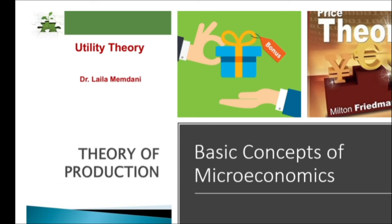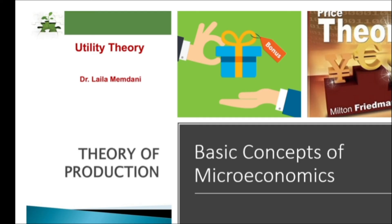Price Theory: utility and production theory interact to produce the theory of supply and demand, which determines prices in a competitive market. In a perfectly competitive market, it concludes that the price demanded by consumers is the same supplied by producers. That results in economic equilibrium.